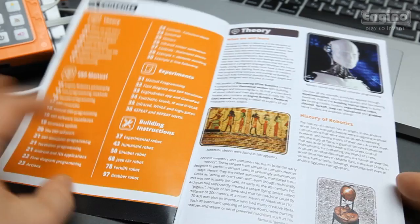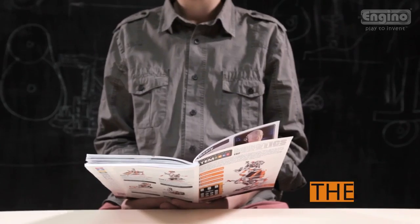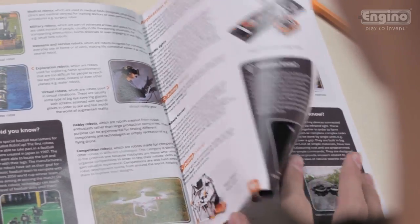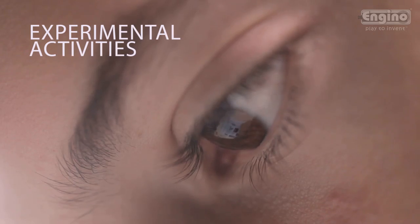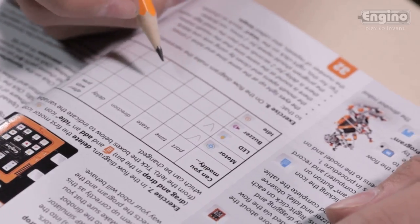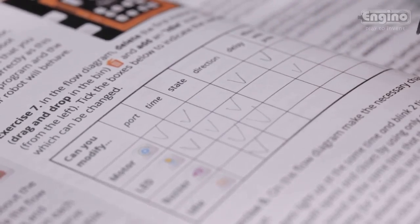The set includes a comprehensive book filled with images, theory and real-life examples of robotic applications. The book also includes innovative experimental activities for hands-on learning, along with a detailed user manual with programming examples to get you started.